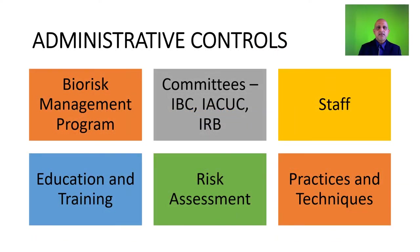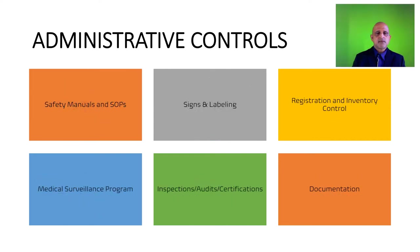The various types of administrative controls include the biorisk management program, the definition of a committee such as an institutional biosafety committee, staff education and training, risk assessment, and practices and techniques. Administrative controls also encompass safety manuals and SOPs, signs and labeling, registration and inventory control, medical surveillance programs, inspections, audits and certifications, and documentation.